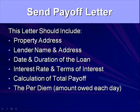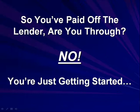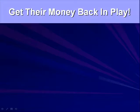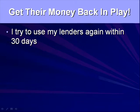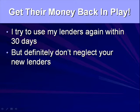For the payoff letter, include: the property address, lender's name and address, date and duration of the loan, interest rate, terms of the interest, calculation of total payoff, and a per diem — the interest amount per day — so the closing agent can adjust if they close a few days early or late. Once you've paid off the lender, you're not done — you've got to get their money back in play. I try to use my lenders again within 30 days, but don't neglect new lenders. Rotate your lenders — satisfied lenders will generally be more willing to wait longer than newer lenders because they know what's in store for them.